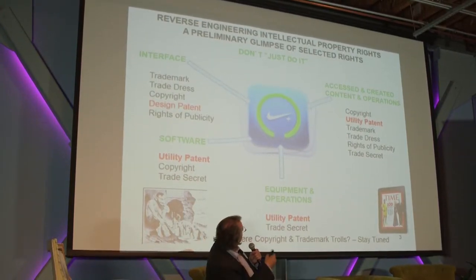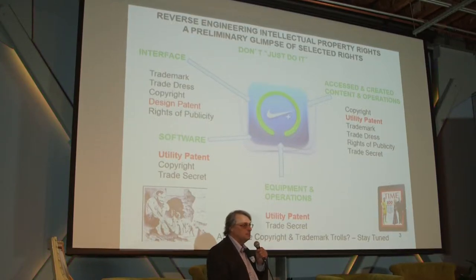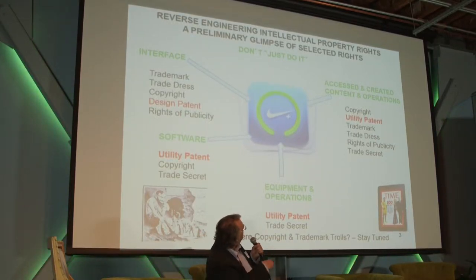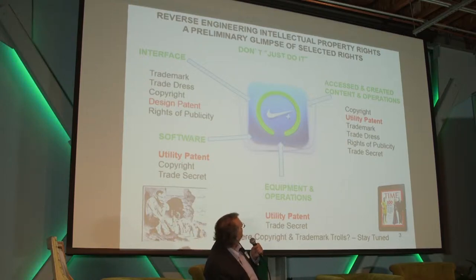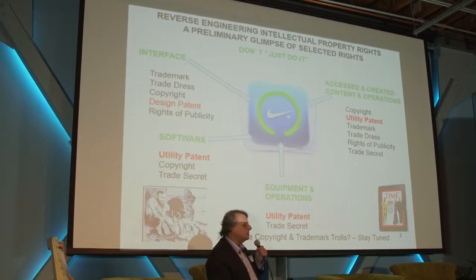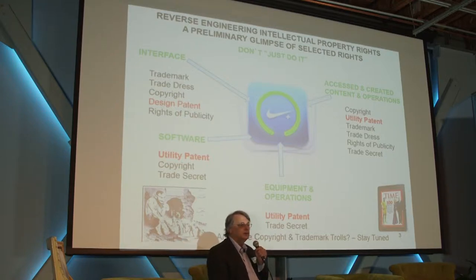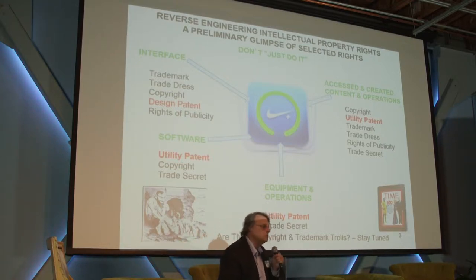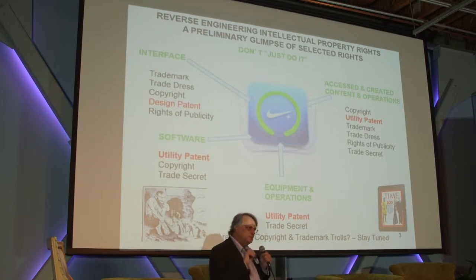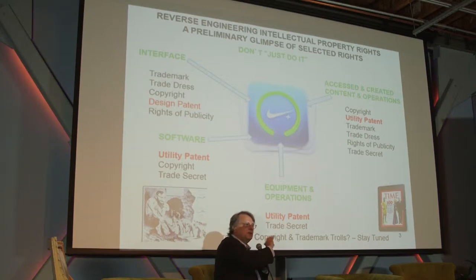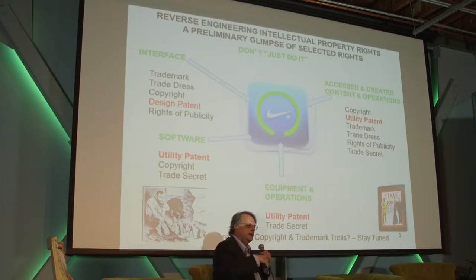In the software space, we have utility patents, copyrights, and trade secrets. The equipment you're using usually involves utility patents, trade secrets, and sometimes design patents. If you know how Nike Plus works and how it syncs up with the chip in your shoe, you've got copyright on code, utility patent, trademark, trade dress, rights of publicity, and trade secret. And yes, copyright and trademark trolls exist — they're not as prevalent as patent trolls, but they're there. In your development space, you are both a magnet for IP claims and a dynamo for generating these types of intellectual properties.